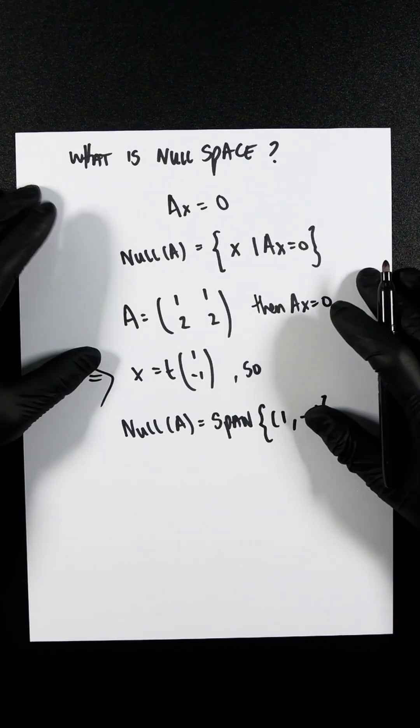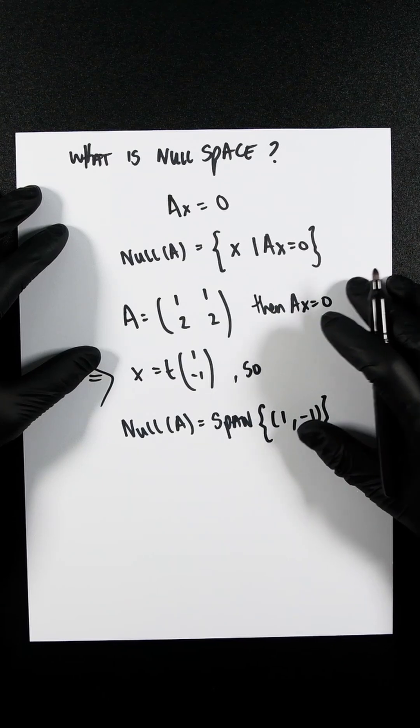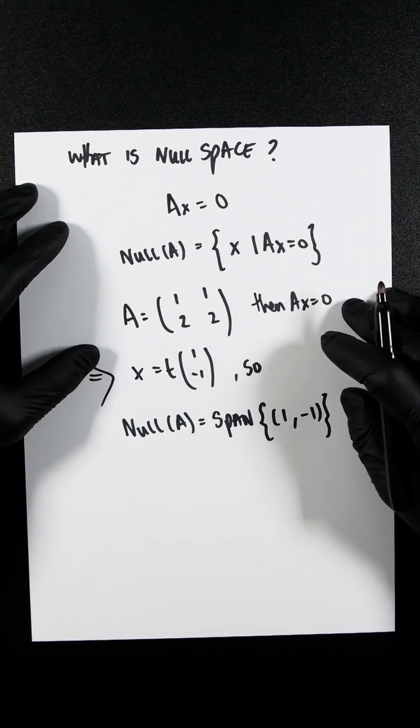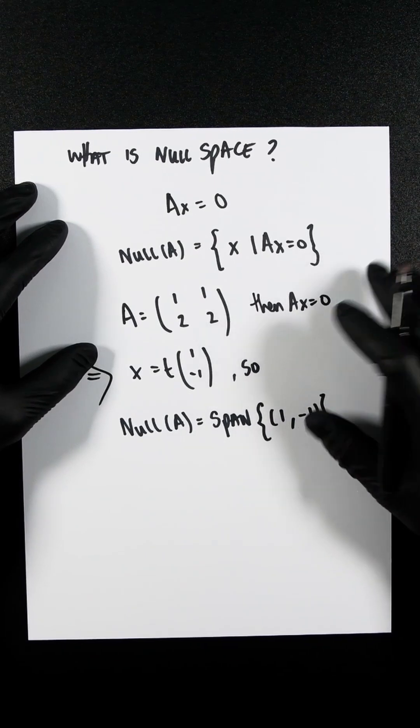So yeah, it's pretty useful in matrix transformation predominantly. You'll see it in a lot of coding as well. I can't really think of any other examples, but that's what a null space is.